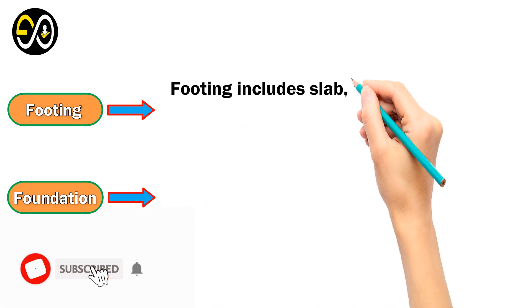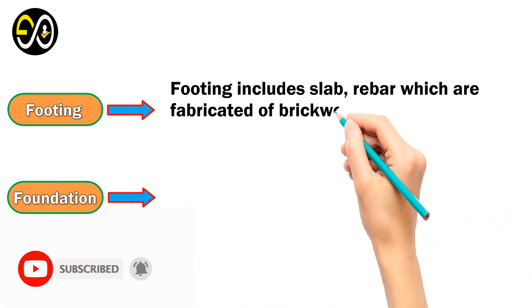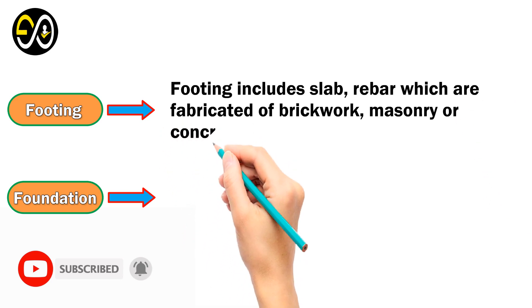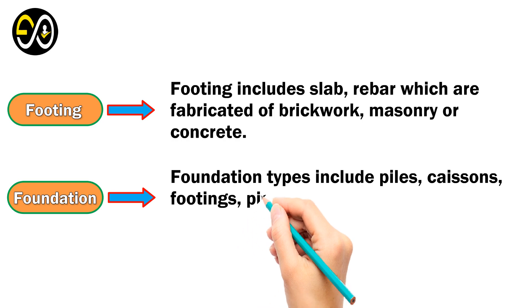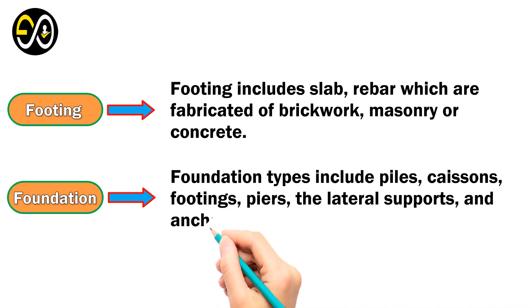Footing includes slab, rebar, which are fabricated of brickwork, masonry, or concrete. Foundation types include piles, caissons, footings, piers, lateral supports, and anchors.